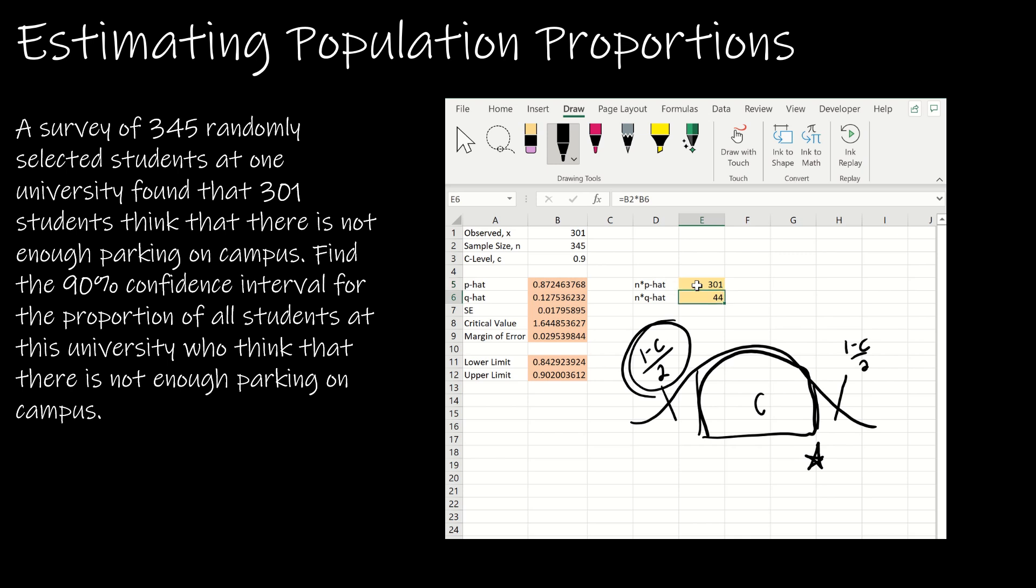Everything populates. I get at least 10 here, at least 10 here, so I know I can continue. I've got P hat, one minus P hat, standard error, critical value, margin of error, and then most importantly the same two values that I had found previously: 84.3 percent to 90.2 percent.